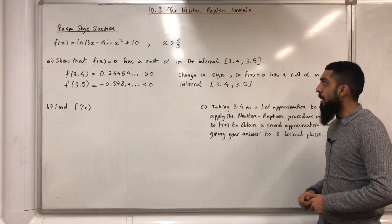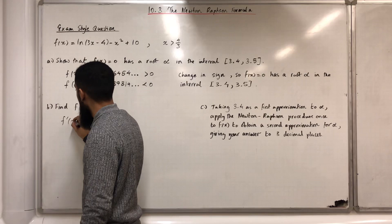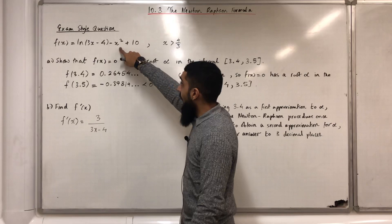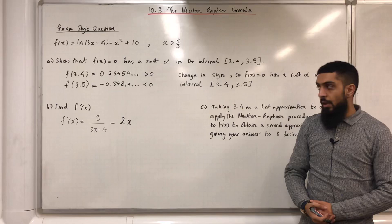Part B, find f'(x). Okay, so we just differentiate f(x). f'(x) equals, differentiate ln(3x - 4) with respect to x, and you get 3/(3x - 4). Differentiate x squared with respect to x, you get 2x, so we can write minus 2x. Differentiate 10 with respect to x, that is 0. So, f'(x) is 3/(3x - 4) minus 2x.